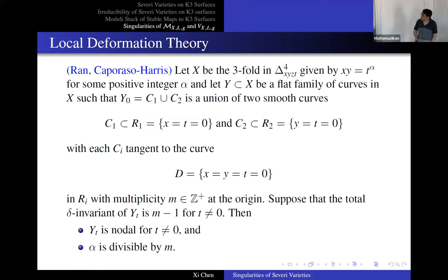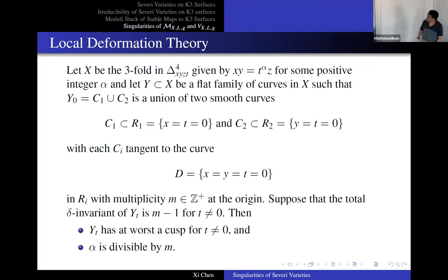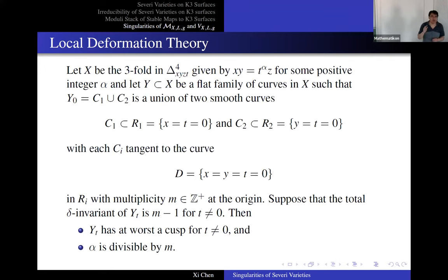Our situation deals with a rational double point at that point, which changes things a little bit. The deformation of those singularities becomes one cusp with M minus two nodes. That's where this cusp comes from. I think I'll stop here.